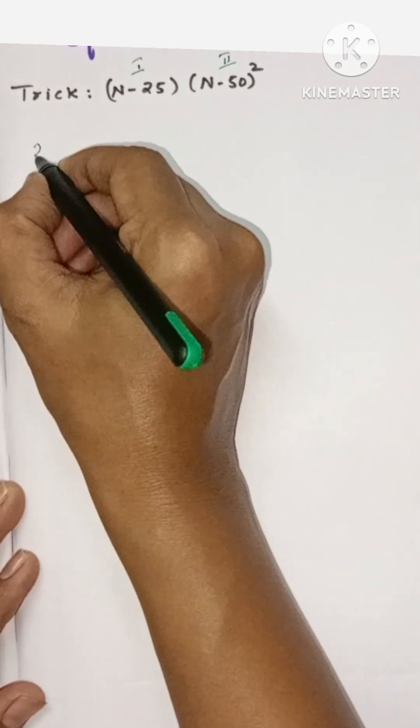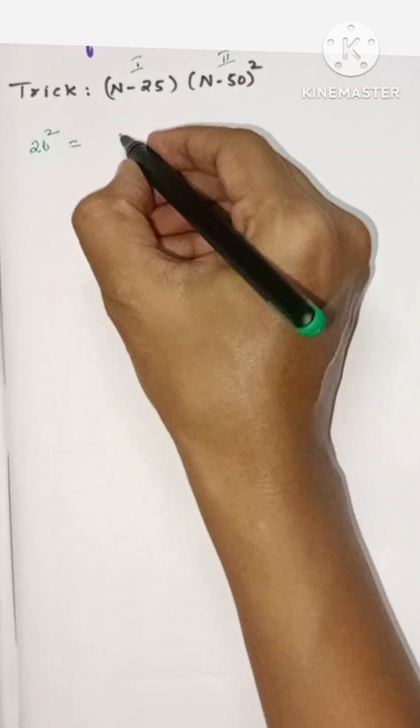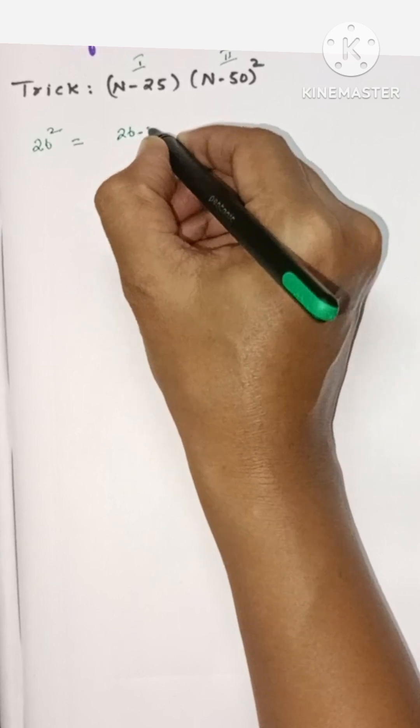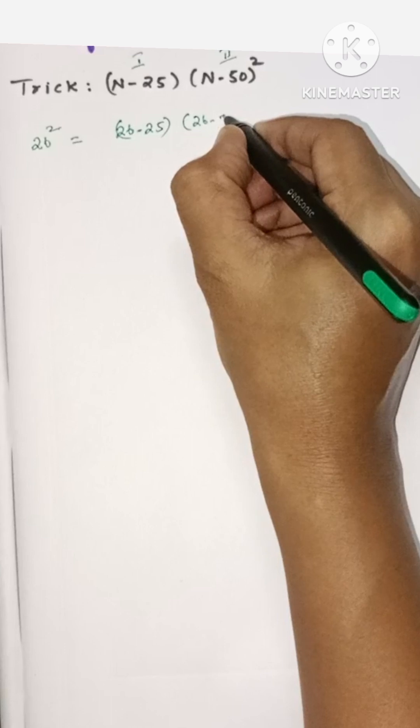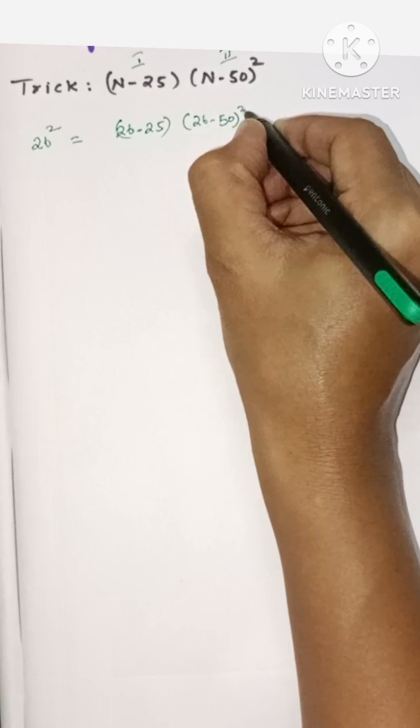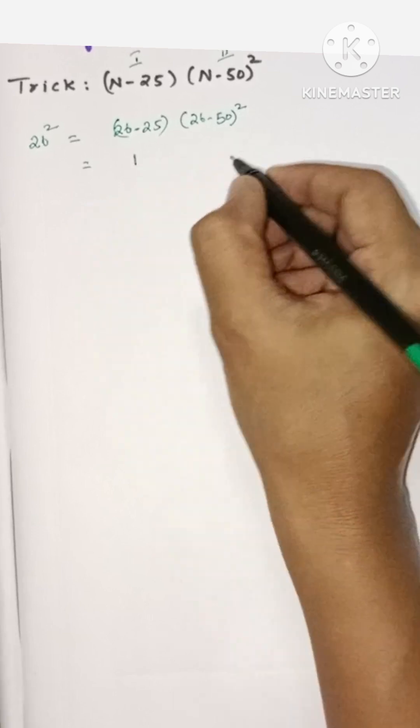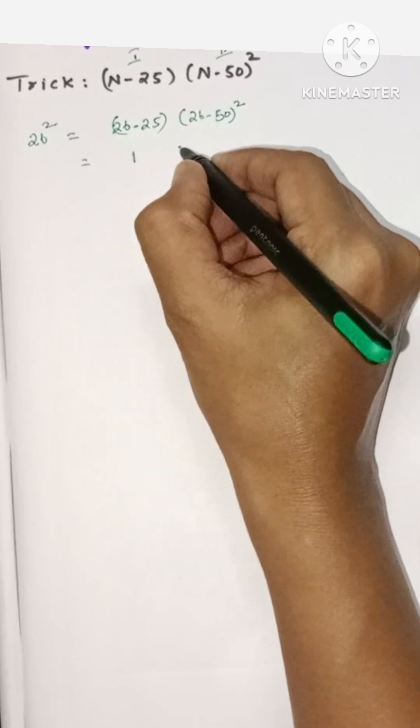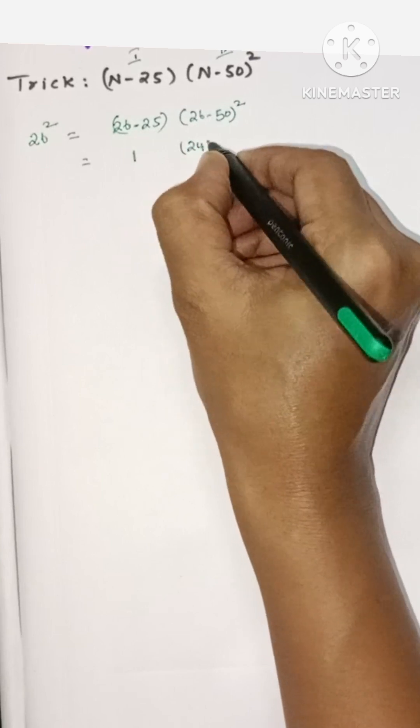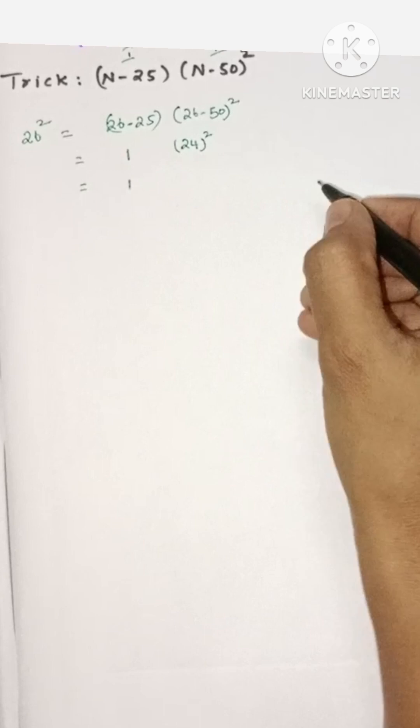If we want to calculate 26 square, first part is 26 minus 25, second part is 26 minus 50 whole square. So 26 minus 25 is 1, and 26 minus 50 is negative 24, so 24 whole square.